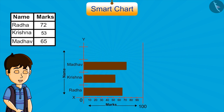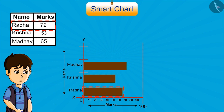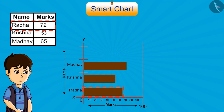Let's represent this in strips. If we place the strips like this, is it right? You can see that according to the chart, Radha got 65 and Madhav got 72. This is very unfair with Radha. We cannot show wrong data like this.